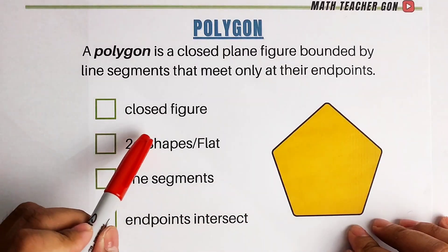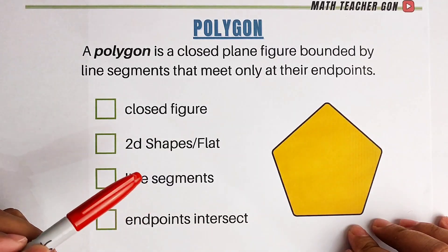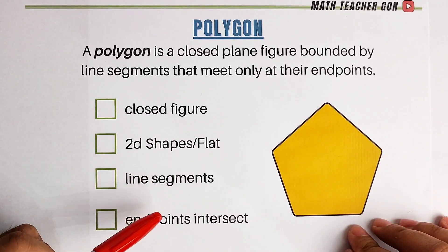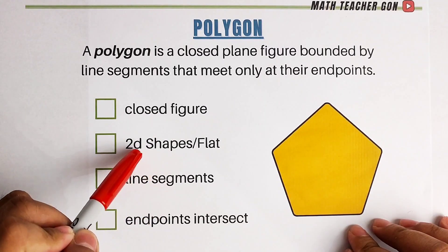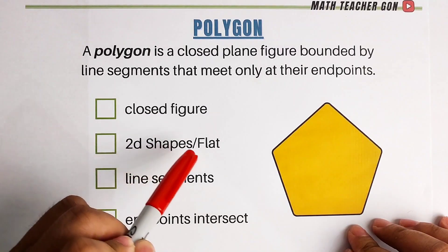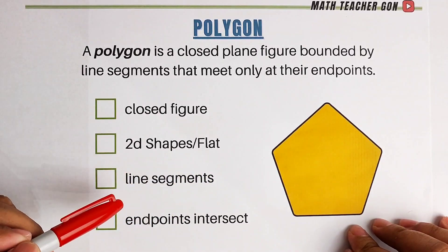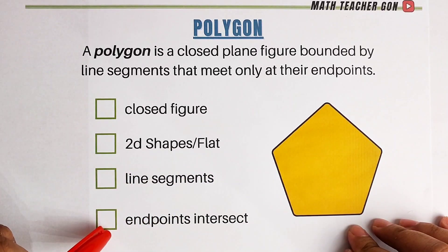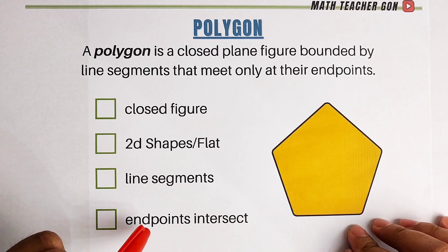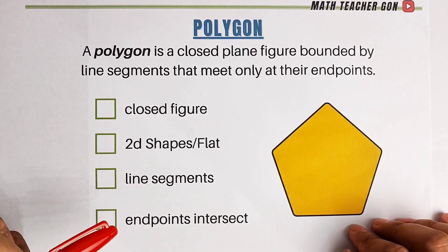First, it is a closed figure. Second, it is a 2D shape or flat surface. Third, it is made of line segments. And fourth, the endpoints are intersecting.